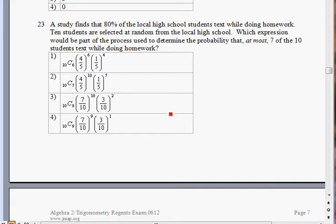The study finds 80% of them do it, and they want to find out that if you take 10 students at random, what is the probability that at most 7 of these 10 students will text. This is a probability question, and you're really trying to find out what at most 7 means.